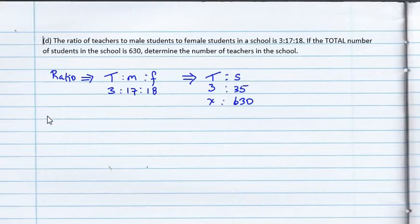Or we can say x over 3. Since we start from the bottom, x over 3 is equal to 630 over 35. That's one way of actually solving for the number of teachers in the school. Now, remember, this represents parts. And these represent the amount of persons.